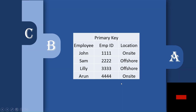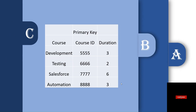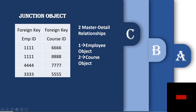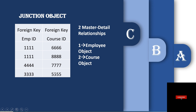To summarize: the Employee table has employee ID as the primary key, and the Course table has course ID as the primary key. To form a many-to-many relationship between these two objects in Salesforce, we create a junction object. The primary key of the first object becomes a foreign key in the junction object, and the primary key of the second object also becomes a foreign key — giving us employee ID and course ID in the junction object. This avoids data redundancy.